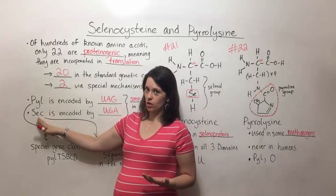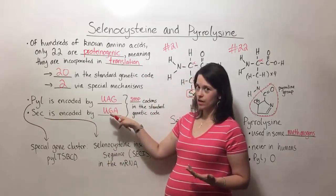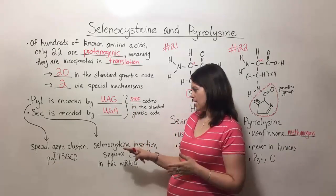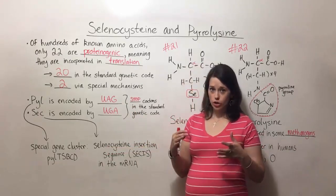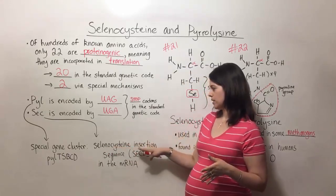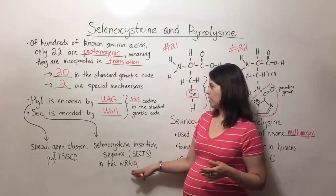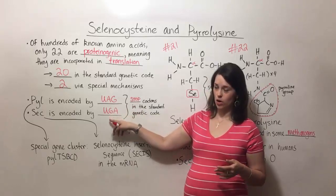Selenocysteine is encoded in a different way. And so encoded by that UGA codon, it would usually be a stop codon, but there is a special kind of structure. It's about 60 nucleotides long called the selenocysteine insertion sequence or SECIS in the mRNA before the UGA codon.